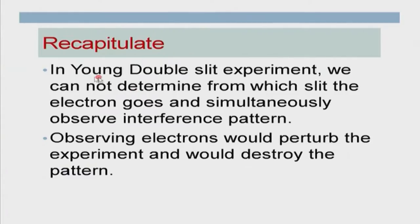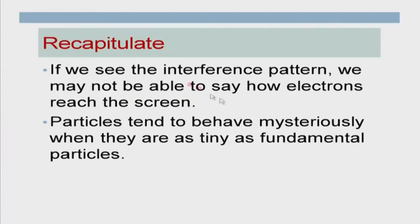Let us start with recapitulating what we did in today morning's lecture on quantum mechanics. We discussed that in Young's double slit experiment, we cannot determine from which slit the electron goes and simultaneously observe the interference pattern. Whenever we try to observe electrons, it will perturb the experiment enough to destroy the pattern.